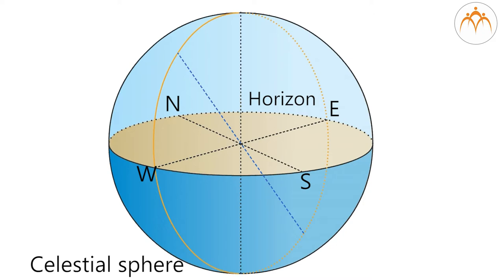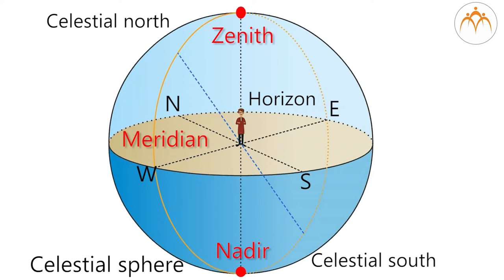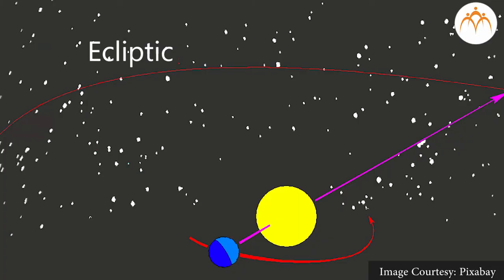Let us discuss a few terms related to the celestial sphere. Zenith: When you stand at the center of the sphere, the point exactly above you is known as zenith. Nadir: The point exactly below you is known as nadir. Celestial poles: If we extend the axis of rotation, we get the celestial north and south poles. Meridian: The great circle passing through both the celestial poles and the observer's zenith and nadir is called the meridian. Celestial equator: The circle we get when we expand the earth's equator is known as the celestial equator.